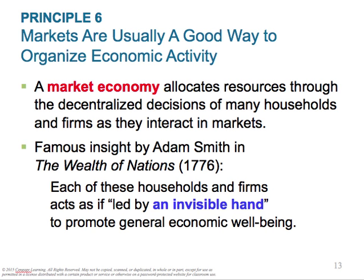Government can also help in cases of market failure — when the market fails to allocate society's resources efficiently. Causes of market failure include externalities, which is when production or consumption of a good affects bystanders, such as pollution from a manufacturer. Other causes include market power, where a single buyer or seller has substantial influence on the market price — an example would be a monopoly. Public policy may promote efficiency by reducing externalities and issues with monopolies.